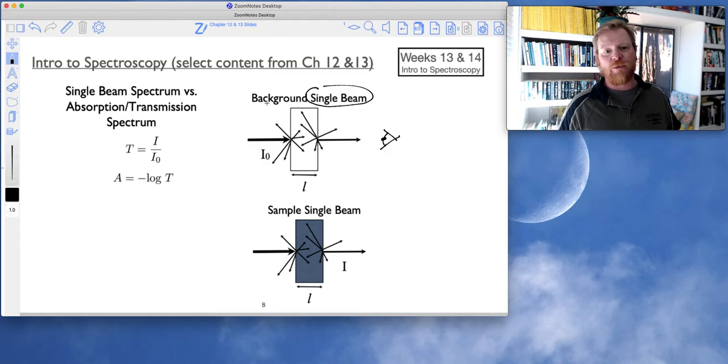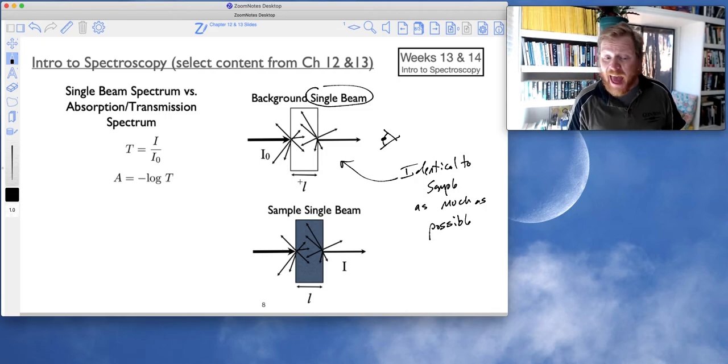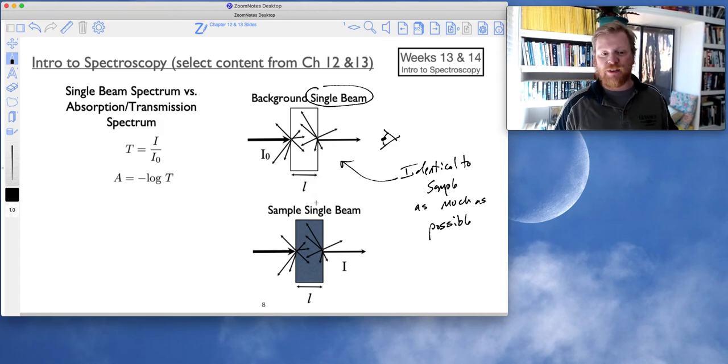So the way we get around with that is we first record a background. So this will be identical to the sample as much as possible. So typically, if we can, we would want to use the same cuvette. If we can't use the same cuvette because we want to keep running multiple samples, then at the very least, we would do some type of study to figure out how different each cuvette is from the next. If there's little bad spots in the glass that contribute to scattering, we would want to maybe throw one of those cuvettes out and use a more pristine one.